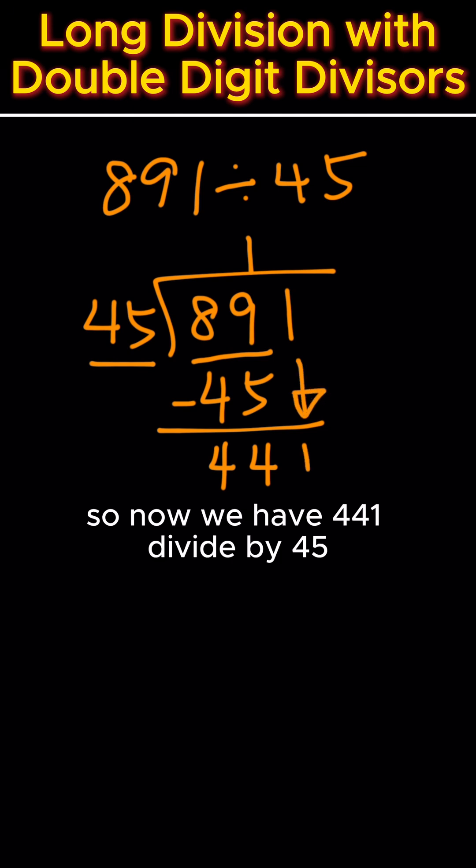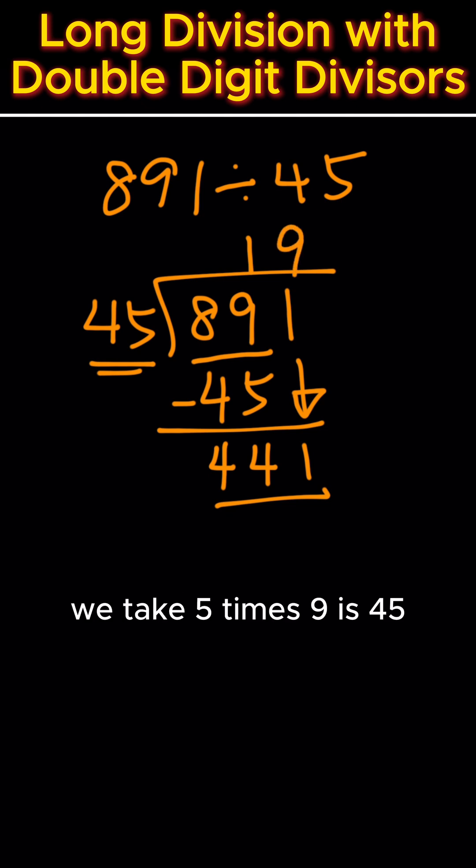So now we have 441 divided by 45. And 441 divided by 45, 9 will go into it. We take 5 times 9 is 45, and then 4 times 9 is 36. 36 plus the 4 will become 40.